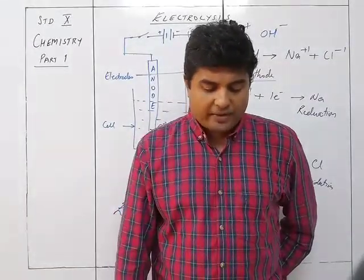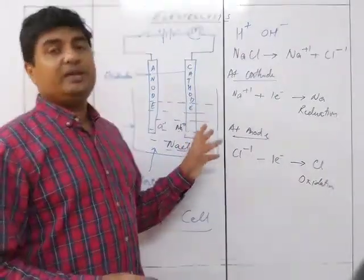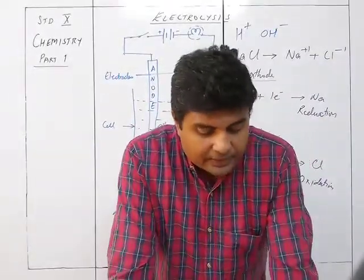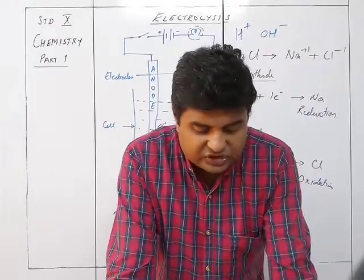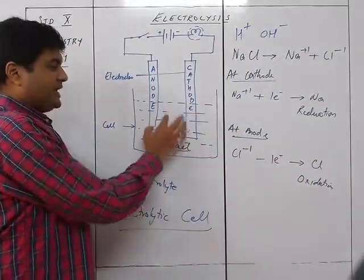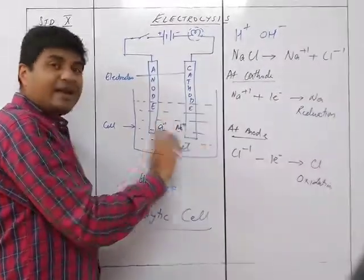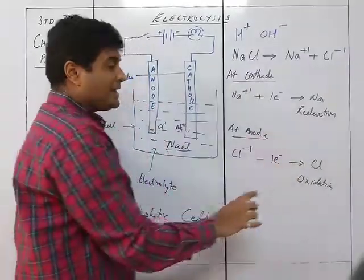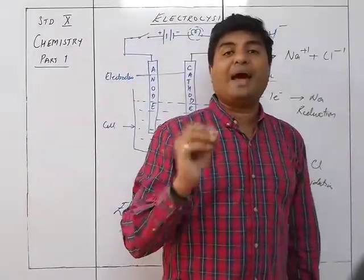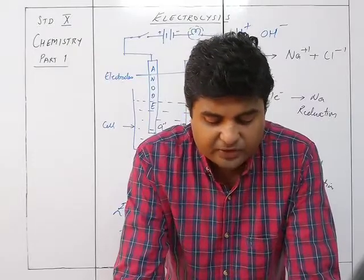The number of electrons gained at the cathode equals the number of electrons donated at the anode — they are always equal. The products of electrolysis are formed at the anode and cathode themselves, since exchange of electrons takes place only at the surface of the electrodes. There is no production of elements in the bulk liquid — neutral Na is formed only at the cathode and Cl only at the anode.